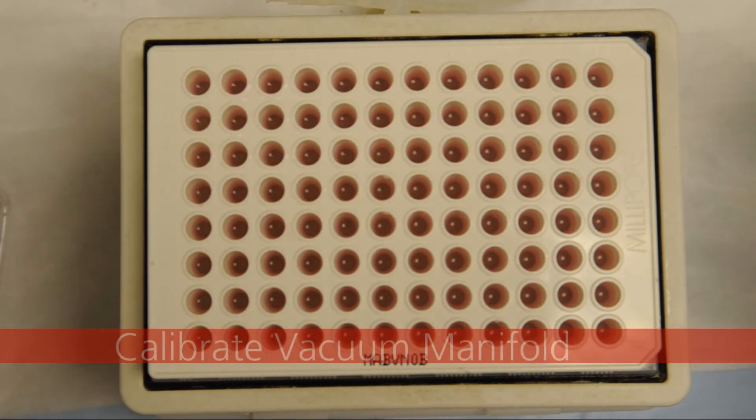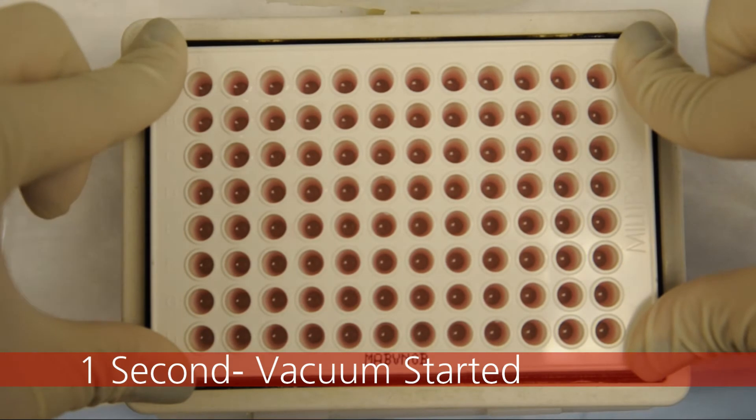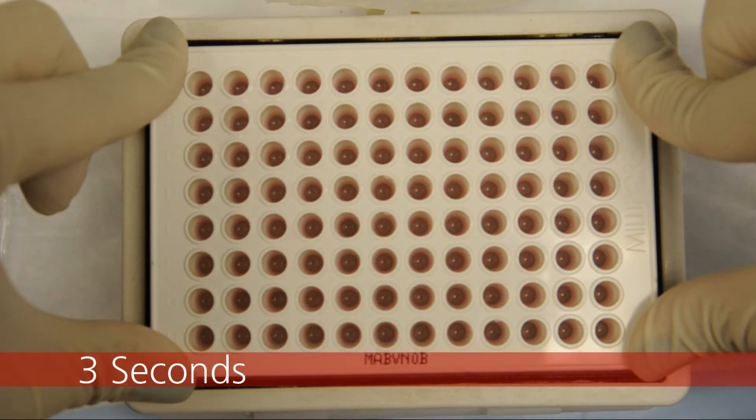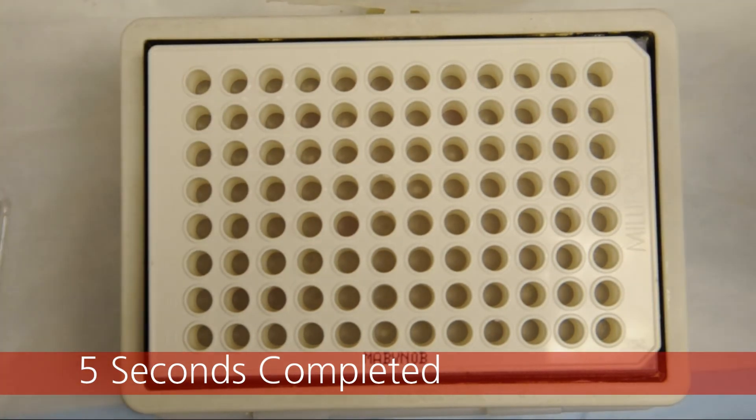Prior to washing, ensure that the vacuum manifold is calibrated. Using an old filter plate, adjust the vacuum so that the amount of time needed to evacuate the wells takes 4 to 6 seconds.